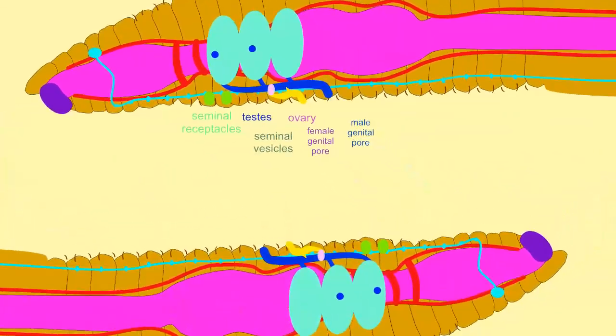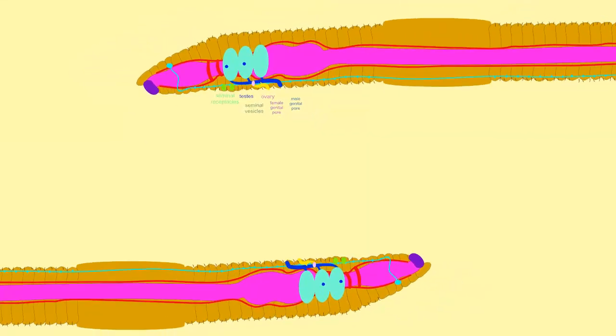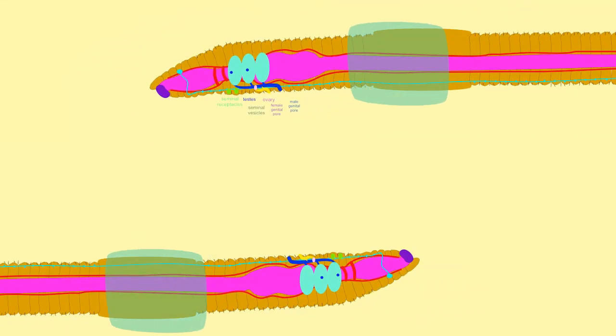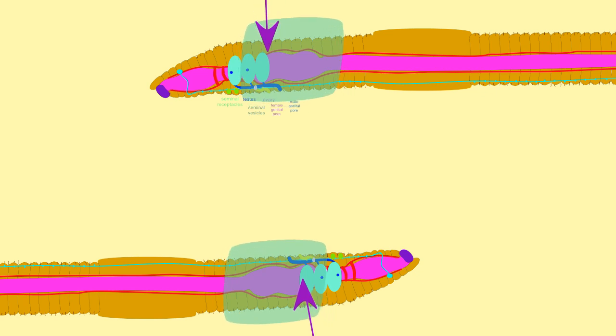After mating, the clitellum produces a mucus cocoon which travels along the width of the body and obtains unfertilized eggs as it passes the female genital pores in segment 14.